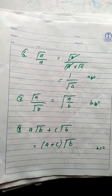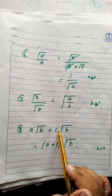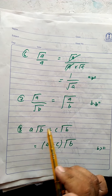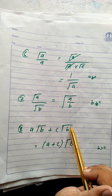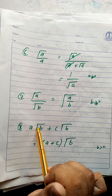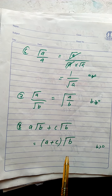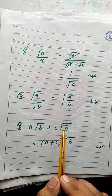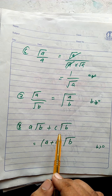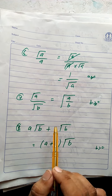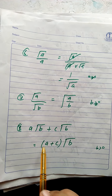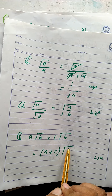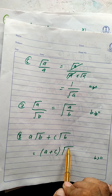Property number eight: a times under root b plus c times under root b is equal to (a + c) times under root b. The coefficients are added and the under root b remains the same. For example, 2√3 + 4√3 = 6√3, and under root three stays in place.